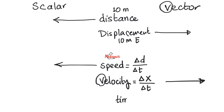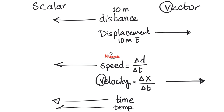Let's try time. Is there such a thing as 10 seconds east or west? No. Time is scalar. Let's try temperature. The temperature of boiling water is 100 degrees Celsius. No up or down, right or left, east or west. So temperature is scalar.